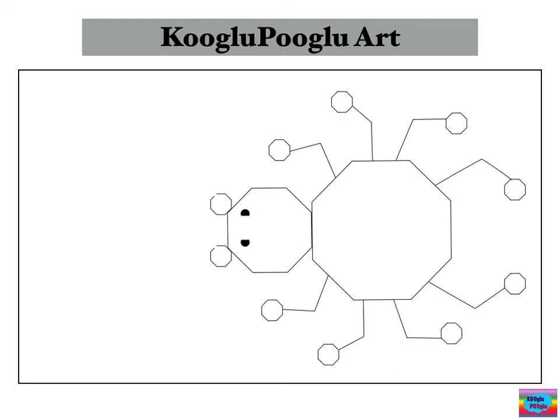And here is my KoogluPooglu spider making a web. And did you know that a hexagon kind of looks confusing to an octagon, but the points and sides are not the same. Because the octagon has eight and the hexagon has six.